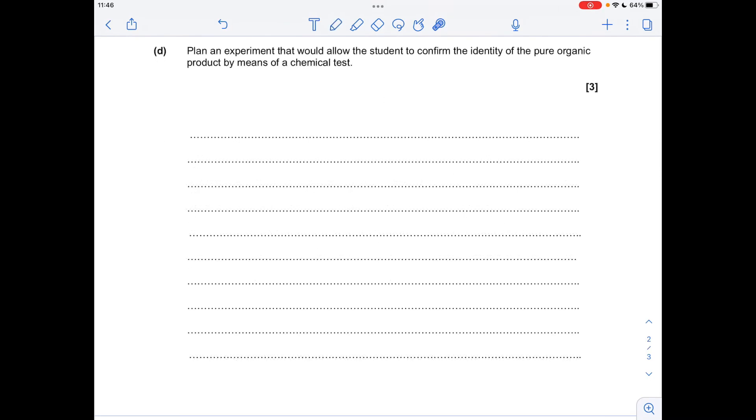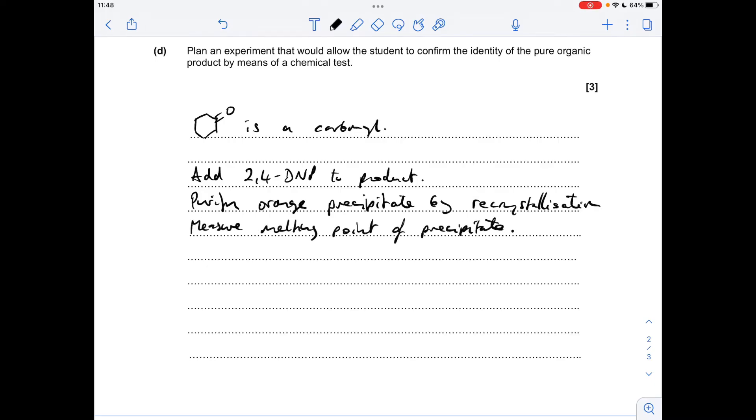And for the final part of the question we've got to plan this experiment that would allow the student to confirm the identity of the pure organic product. Remember this is cyclohexanone which is a carbonyl. So what we do is add 2,4-DNP or Brady's reagent to the product. That would give us an orange precipitate which we would then need to recrystallize to purify it. We'd then measure the melting point of the precipitate and compare it to known data values.